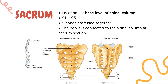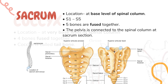Sacrum. This is located at the base of the spine. Here 5 bones are fused together, from S1 to S5. The pelvis is connected to the spinal column at the sacrum section only.